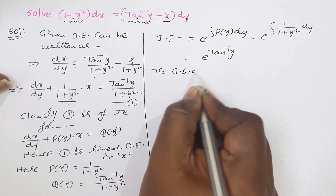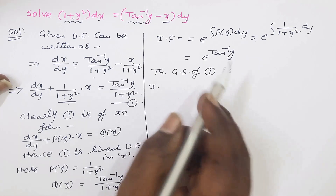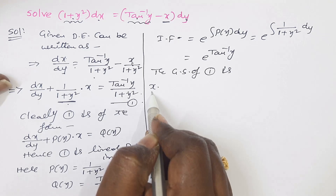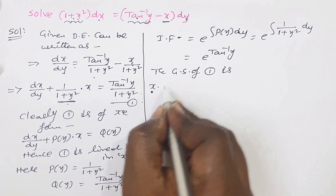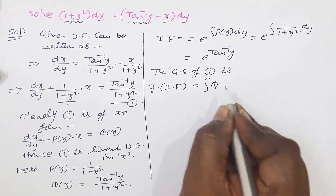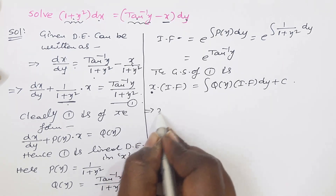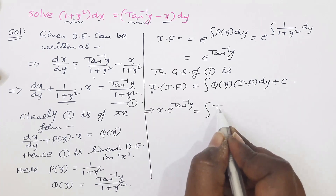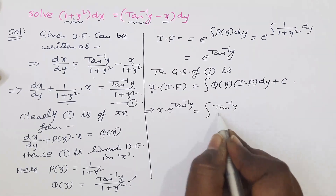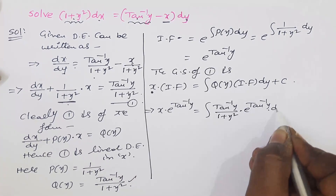The general solution is: x times e to the power of tan⁻¹(y) equals the integral of Q(y) times the integrating factor dy plus c. Always remember to start the general solution with the dependent variable. So: x · e^(tan⁻¹y) equals the integral of [tan⁻¹(y) divided by (1 + y²)] times e^(tan⁻¹y) dy. For this integration, we use the substitution t equals tan⁻¹(y).